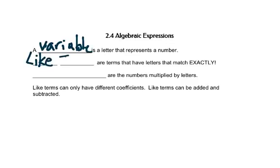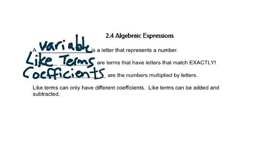Like terms are terms that have letters that match exactly. Coefficients are the numbers that are multiplied by the letters. Like terms can only have different coefficients, and like terms can be added or subtracted.